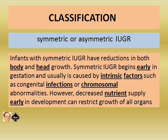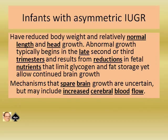What is the classification? Symmetric or asymmetric IUGR? Infants with symmetric IUGR have reduction in both body and head growth. Symmetric IUGR begins early in gestation and is usually caused by intrinsic factors such as congenital infections or chromosomal abnormalities. However, decreased nutrient supply early in development can also restrict growth of all organs, resulting in symmetric IUGR.